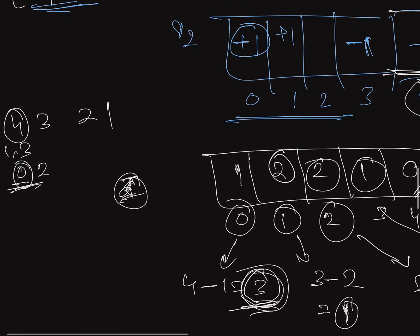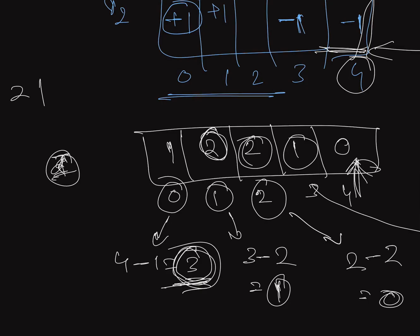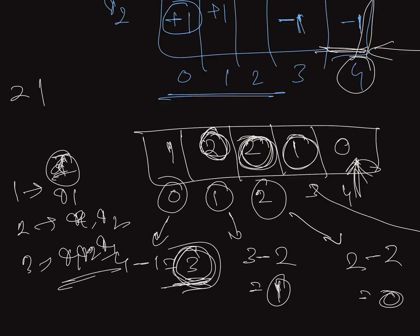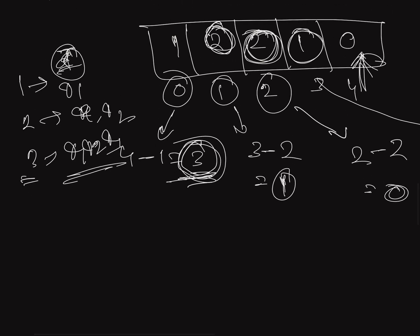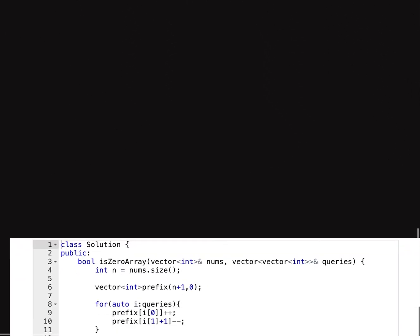The prefix sum indicates the maximum number of queries that cover each index, which equals the maximum value we can decrease at that index. We added the extra index (n+1) to handle the case where r+1 would go out of bounds. Now using the prefix sum array and the nums array, we check if we can decrease each element to 0 or not. Now let's go to the code — it will be more clear.